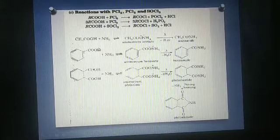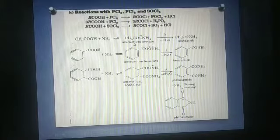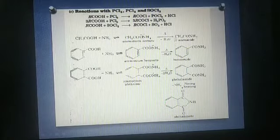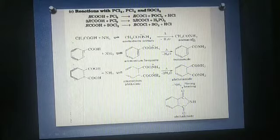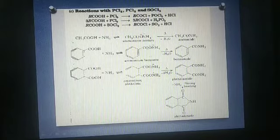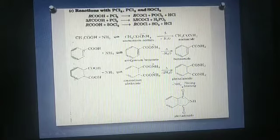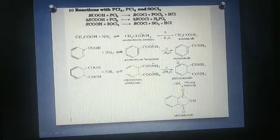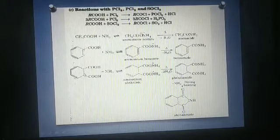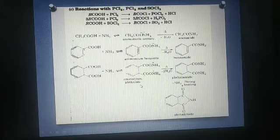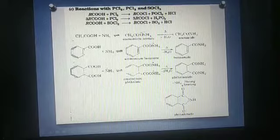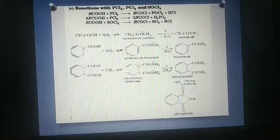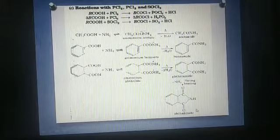Reaction with NH3. Acid forms ammonium acetate with NH3 and on dehydration, it gives acetamide CH3CO-NH2. This is benzoic acid. It forms ammonium benzoate with NH3 and on dehydration, it gives benzamide. This is phthalic acid. It gives ammonium phthalate on reaction with NH3 and on dehydration, it gives phthalimide. And when phthalimide is strongly heated, it forms phthalimide.